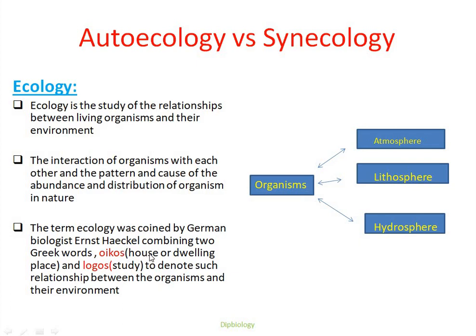Oikos means house or dwelling place where the organism lives, and Logos means the study of their relationships with the environment. Here, you can see the organisms are interacting with the environments. The environment may be the atmosphere, which is related to air; lithosphere, which is related to earth; and hydrosphere, which is related to water.